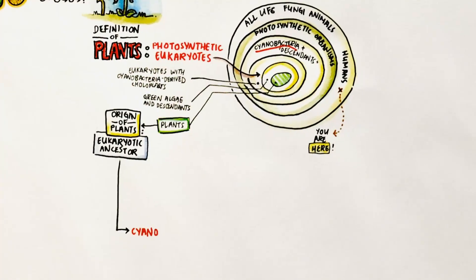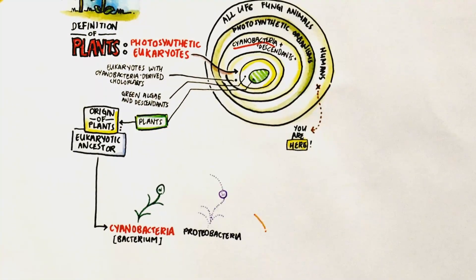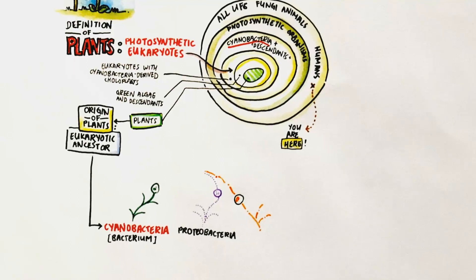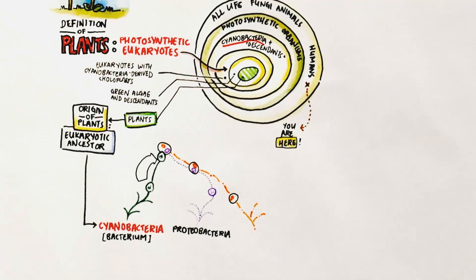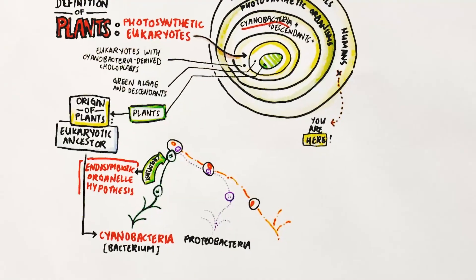What makes plants able to carry out photosynthesis? It is the chloroplast. The ancestors of plants took in the chloroplast from prokaryotic cyanobacteria. This is known as the endosymbiotic organelle hypothesis.